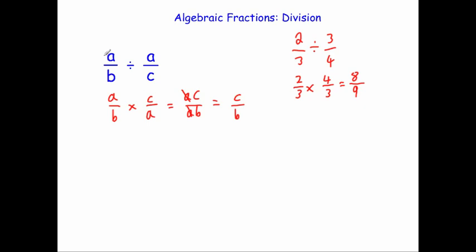So a over b divided by a over c is equal to c over b. We keep the first fraction the same, multiply by the reciprocal of the second one, and make sure you cancel anything down — a times c is ac, b times a is ab, cancel the a's, giving c over b.